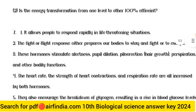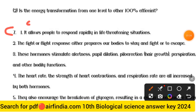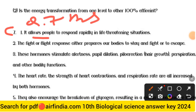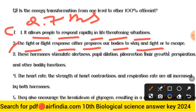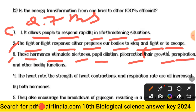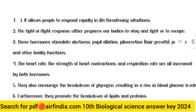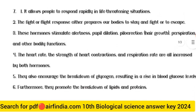Question 7 answer: It allows people to respond rapidly in life-threatening situations. Second point — the fight or flight response either prepares our bodies to stay and fight or to escape. Third point — these hormones stimulate alertness, pupil dilation, piloerection, perspiration, and other bodily functions.